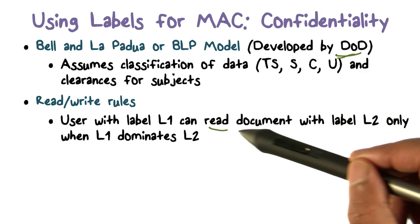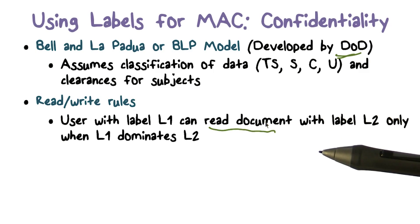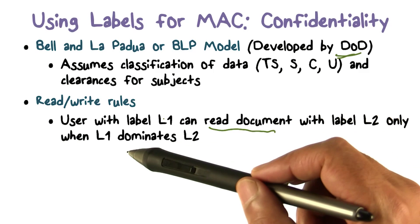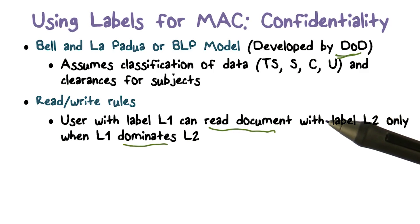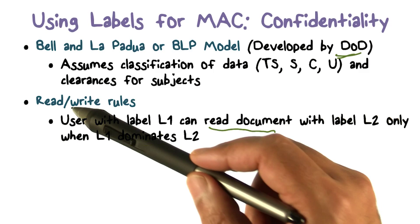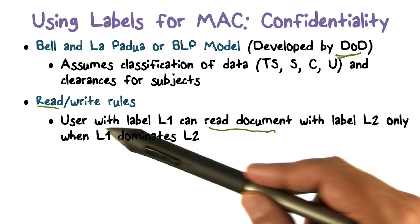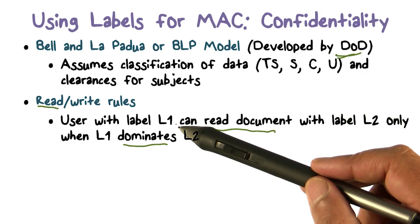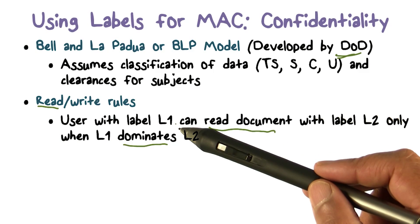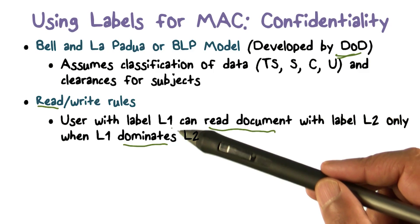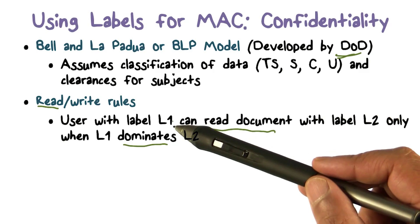The second part of a label is the compartment or category. As we said before, it depends on what the document is about — for example, is it chemical, nuclear, or conventional, or some combination? So a top secret user working on nuclear and conventional would have that as their compartment.